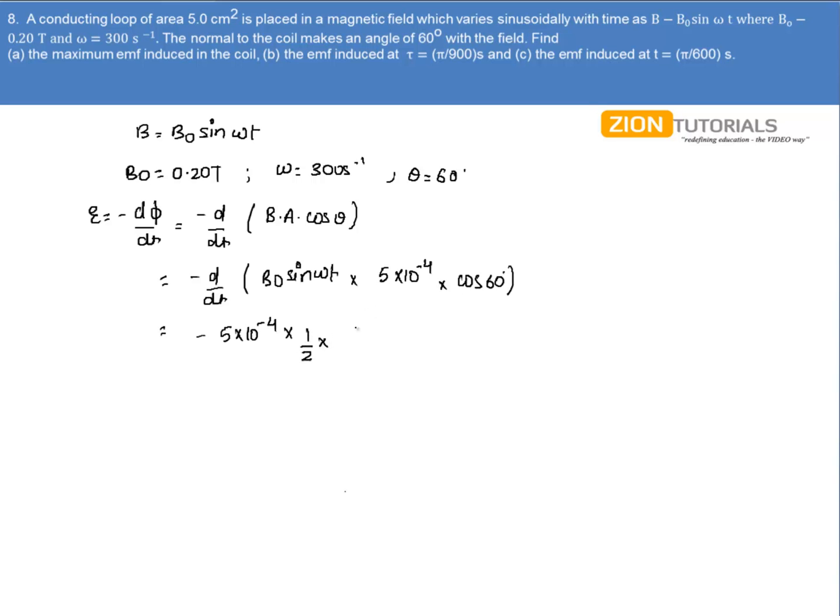On differentiating we get minus 5 × 10⁻⁴ into cos 60°, that is 1/2, into B₀ cos ωt into ω. On substituting all the values we get minus 5 × 10⁻⁴ into 1/2 into 0.20 into ω, that is 300, cos ωt.